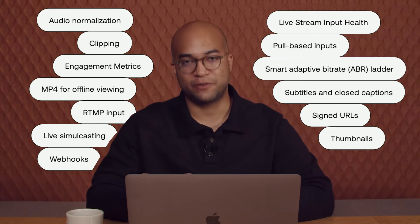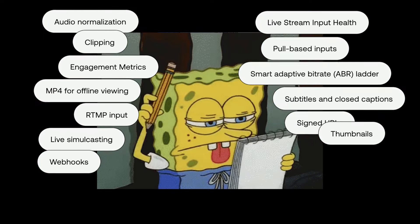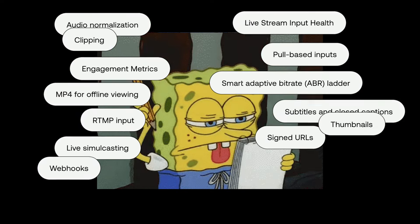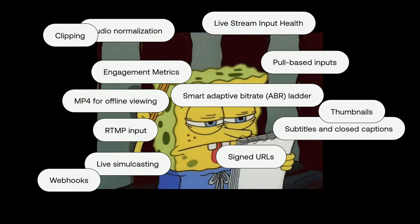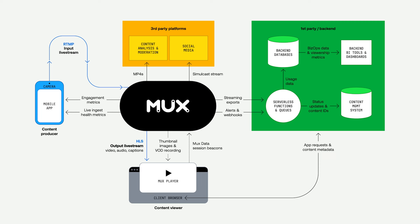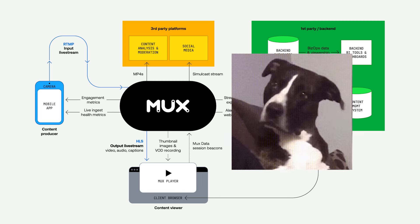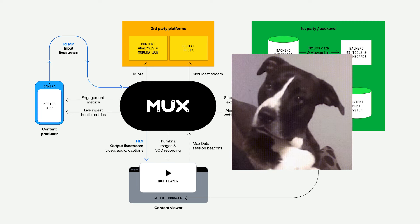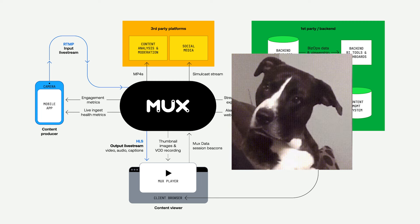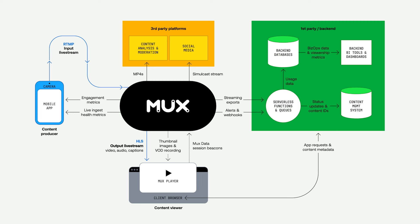The beauty of working with an API platform like Mux is that it's super flexible, so you can choose what features make the most sense for you. But maybe you're wondering how that flexibility influences your application stack. Well in this video, I'll show you. Here's a quick peek — probably looks like a lot, but don't worry, it's simpler than it seems. So let's break it down.